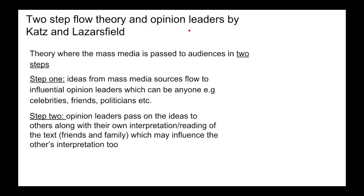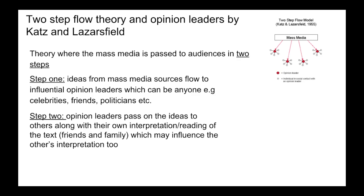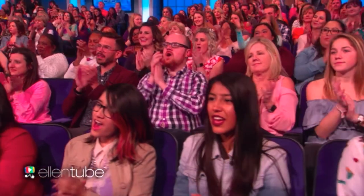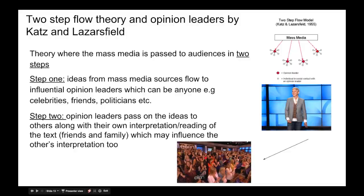Two-Step Flow Theory and Opinion Leaders by Katz and Lazarsfeld. The theory is that mass media is passed to audiences in two steps. Step one: mass media sources flow to influential people, which can be anyone such as celebrities, friends or politicians. Step two: the opinion leaders pass on the ideas to others along with their own opinion and interpretation of the text — this could be to friends and family, who will also be influenced by the opinion leader's interpretation. And it will keep passing on and on. For example, Ellen is an opinion leader and the audience are influenced by her opinion.